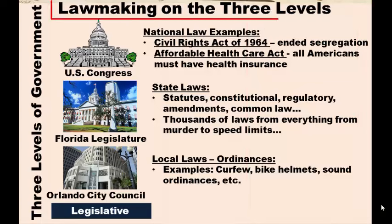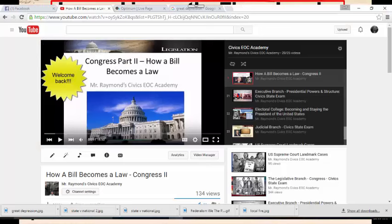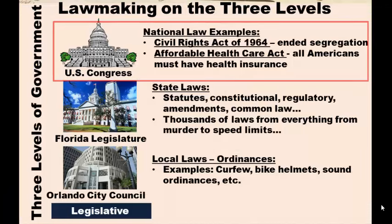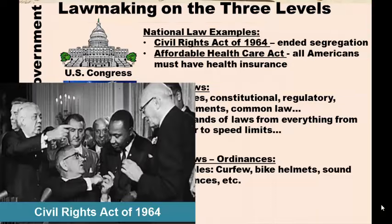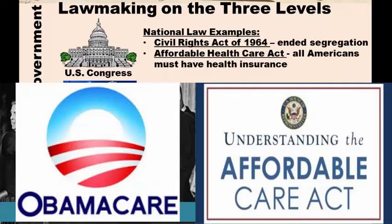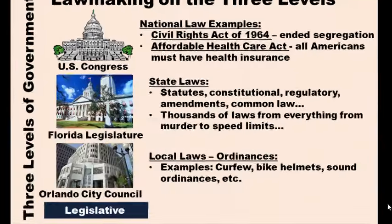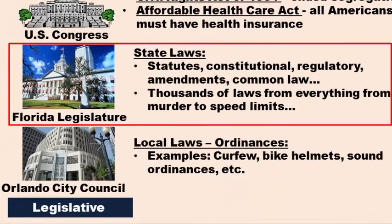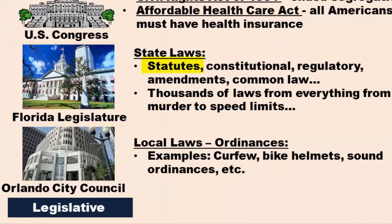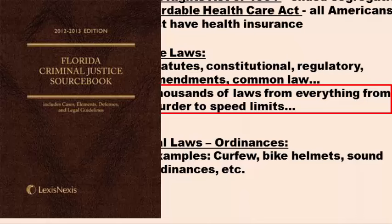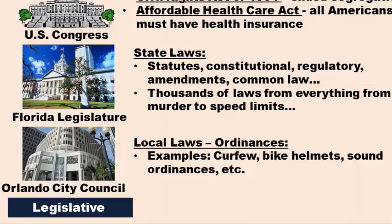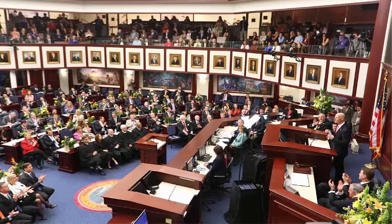Our benchmark says we need to know the lawmaking process at all three levels. National laws are called acts, like the Civil Rights Act of 1964, which ended segregation, or the Affordable Health Care Act, known as Obamacare. States pass a lot of laws called statutes — laws passed by legislatures. State legislatures pass most laws dealing with everything from murder to speed limits, as state and local police are responsible for enforcing state laws that guide our everyday actions. State lawmakers also pass amendments and regulations.